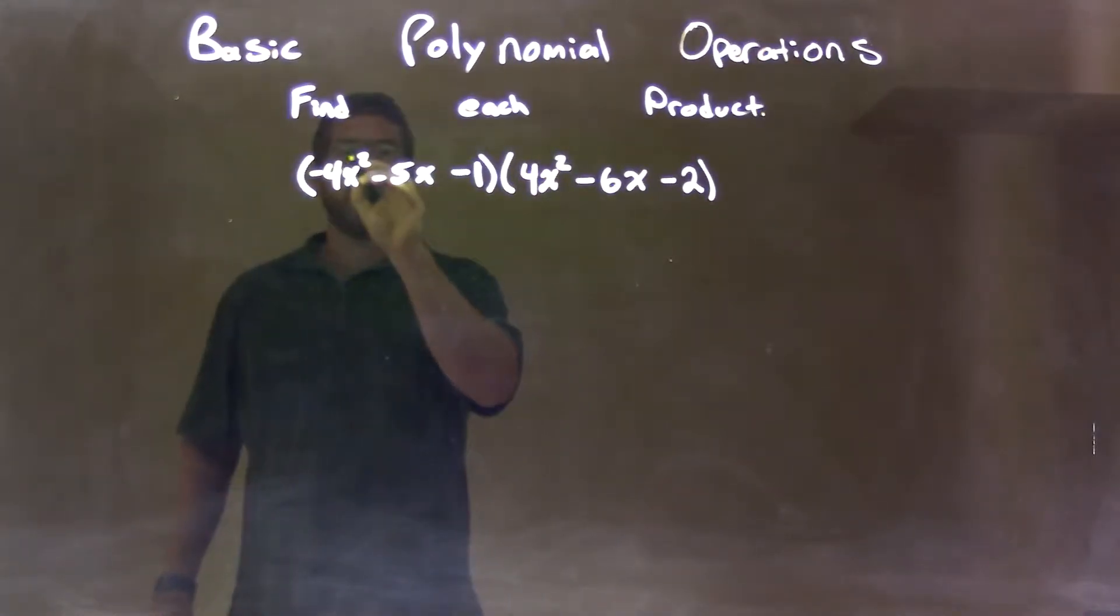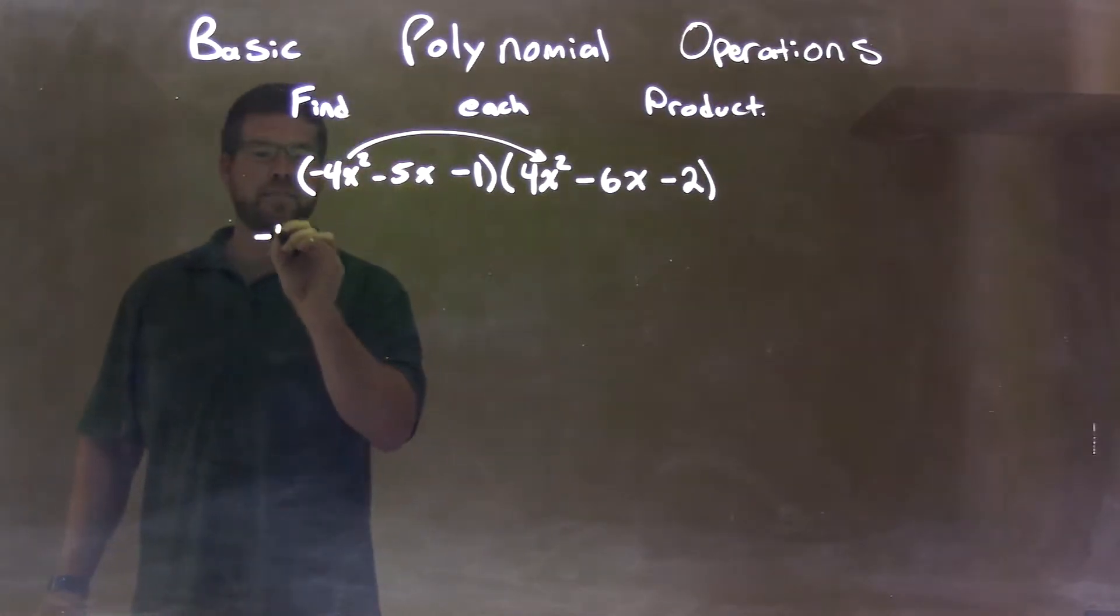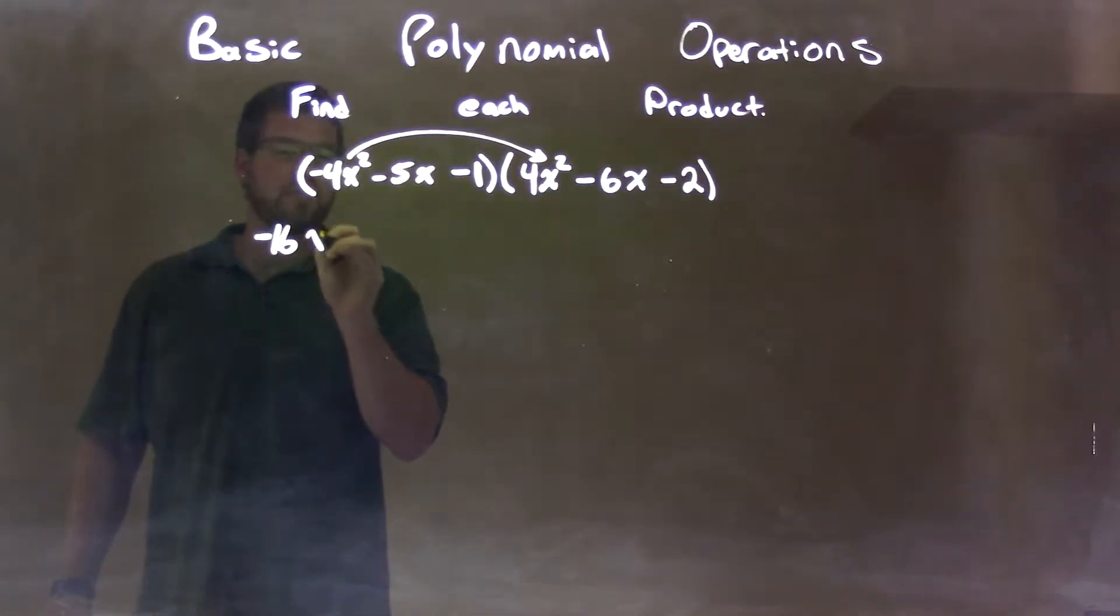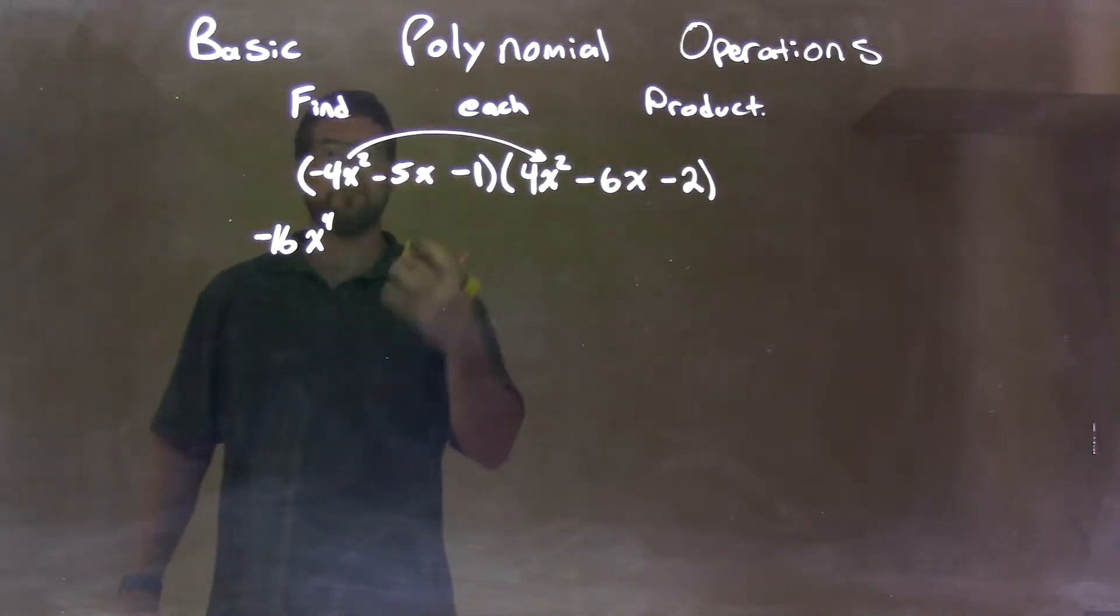Negative 4x squared times a positive 4x squared, that's going to be negative 16, but then it's x to the fourth power, right? x squared times x squared is x to the fourth power.